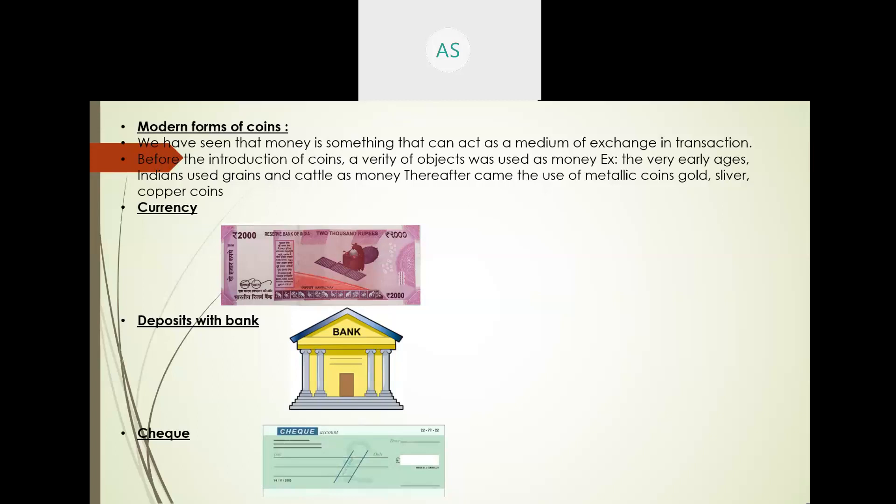Demand deposits offer an interesting facility — an essential characteristic of money. You may have heard about payment made by check instead of cash. Sometimes you don't have hard cash of forty or fifty or sixty thousand, but you need to pay that amount — for example, to purchase raw materials for your shop. For such large transactions, the check is used as the third form of money. Instead of paying cash, you give a check for payment. The bank provides a checkbook to the account holder. A check is a paper instructing the bank to pay a specific amount from a person's account to the person whose name the check has been issued.